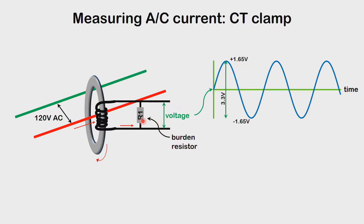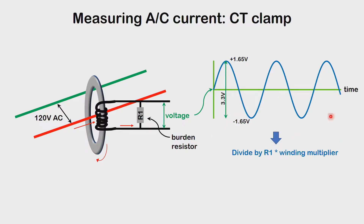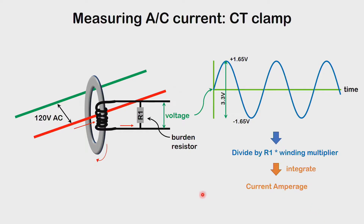Once you know this, you divide the voltage by the burden resistor and multiply by the number of windings to get the amount of current being consumed by the wire. Then you integrate over a function of time to get your current in amperage. This is how you measure AC currents.